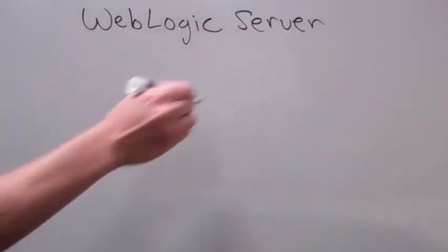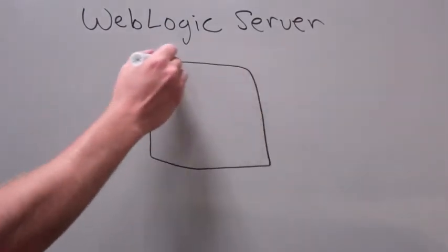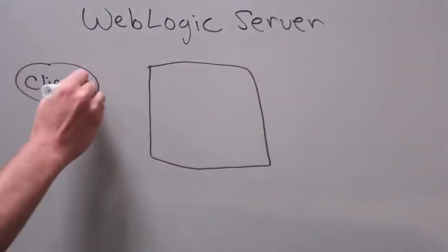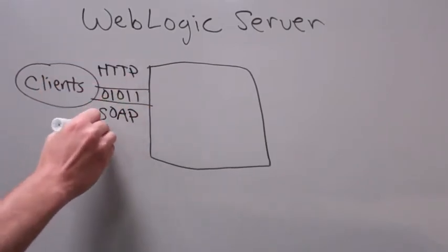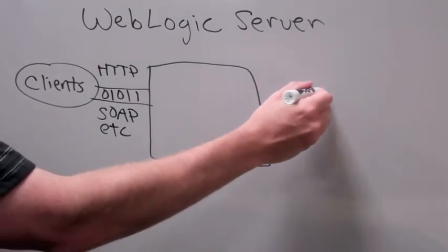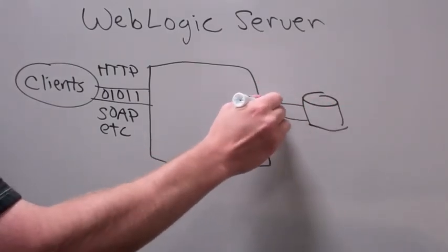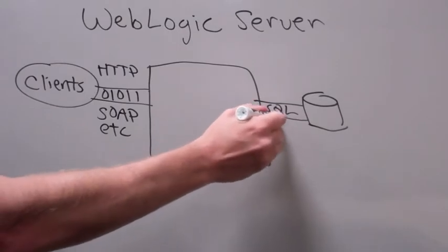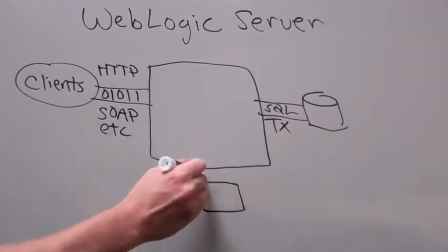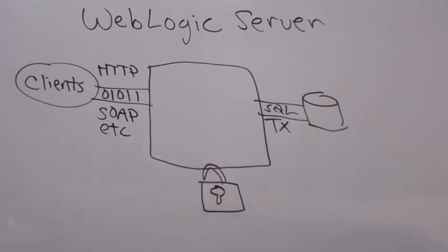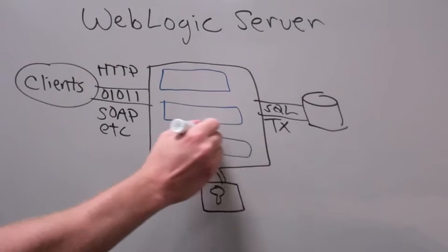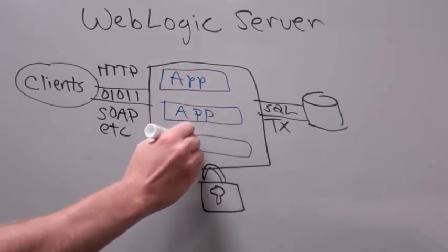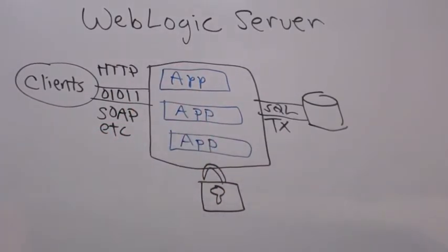An application server like Oracle WebLogic Server works in much the same way as the apartment building. WebLogic Server supports client protocols like HTTP and SOAP and also provides other services like database access and persistence and transactions for data integrity and security. So a developer can just concentrate on the interface and the business logic of their application, like letting employees view their paycheck stubs, for example, and let WebLogic take care of the rest.